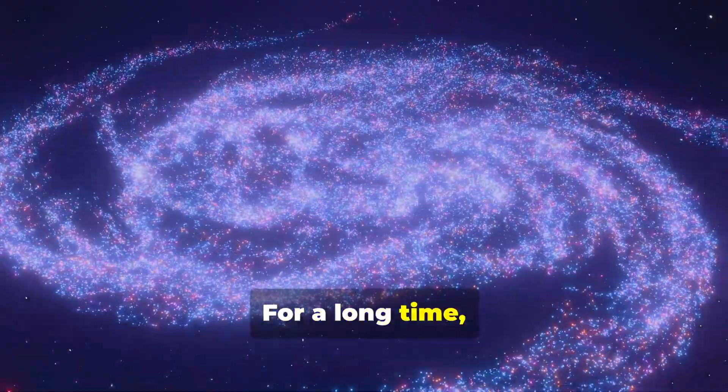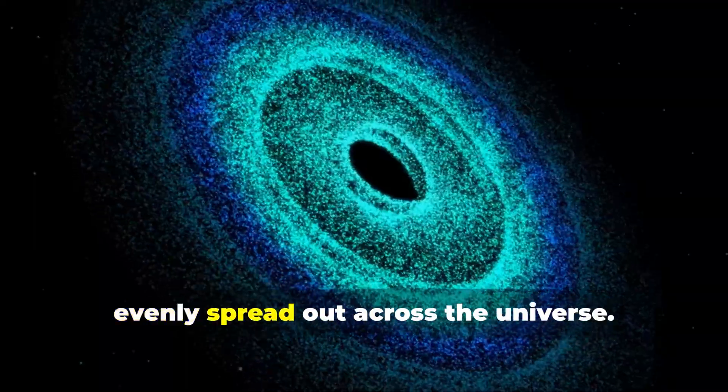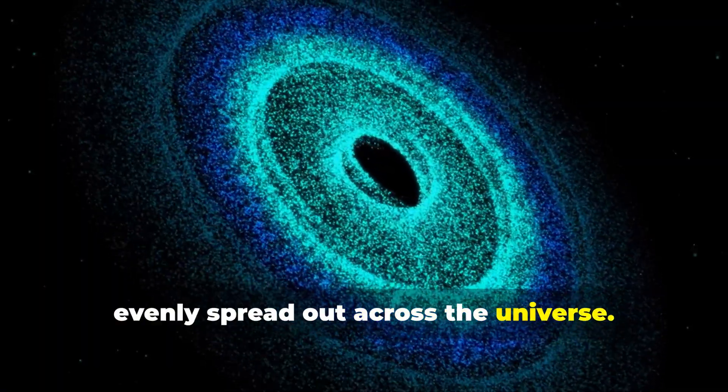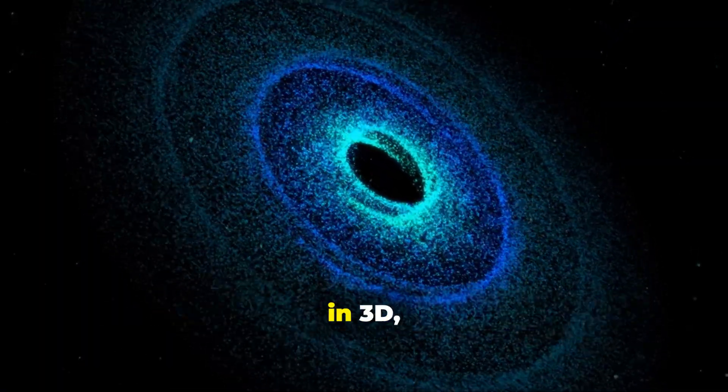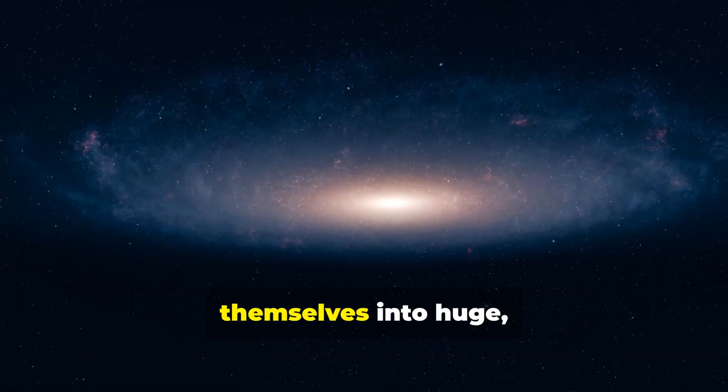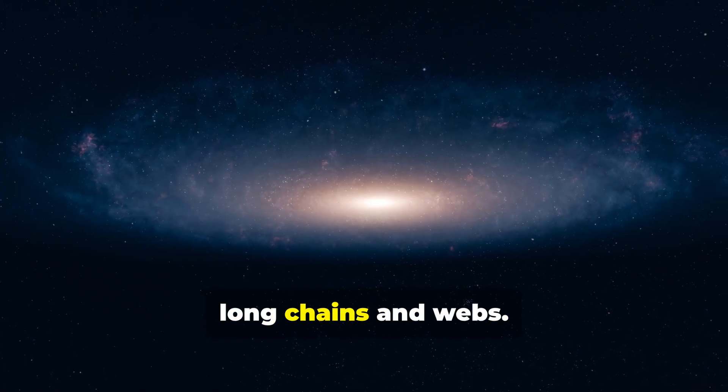For a long time, scientists thought that matter was evenly spread out across the universe. But when they started mapping galaxies in 3D, they found that galaxies organized themselves into huge, long chains and webs.